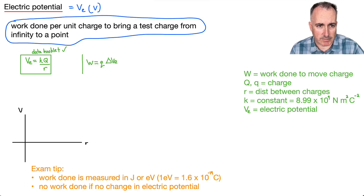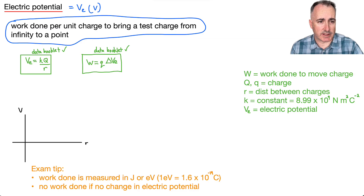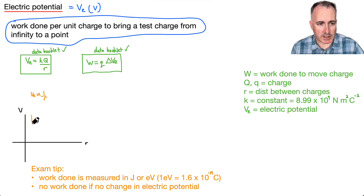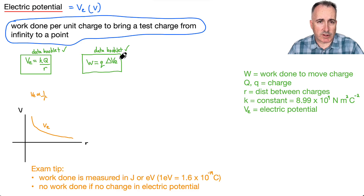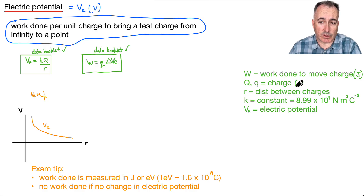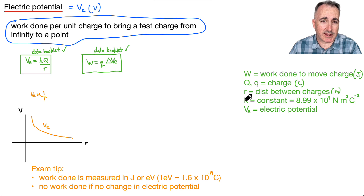Ve is also proportional to 1 over R, so it has the same shape graph as electric potential energy. Let's take a look at the units. W is the work done to move the charge, so that's in joules. Q — uppercase or lowercase — those are charges in coulombs. R is the distance between charges, in meters. K is just a constant. And electric potential Ve is measured in volts.